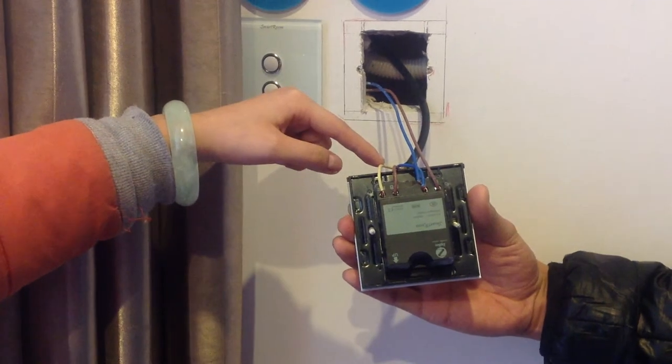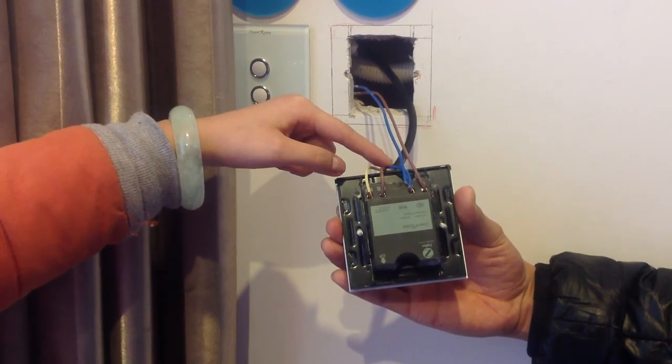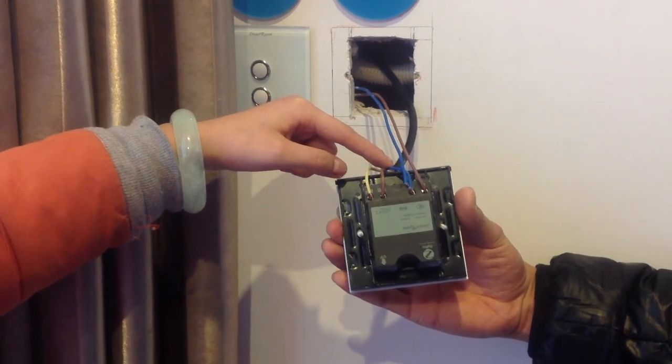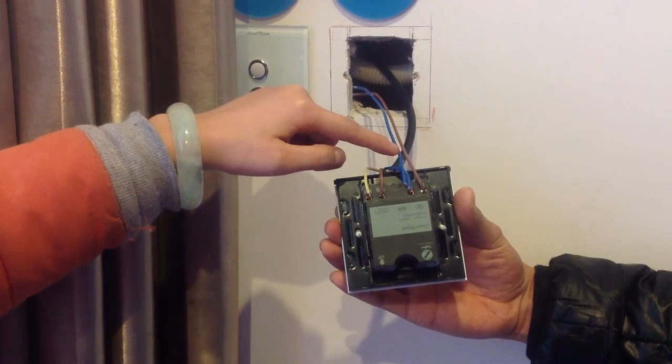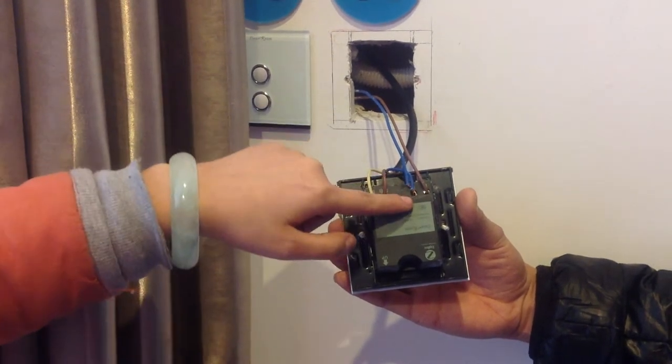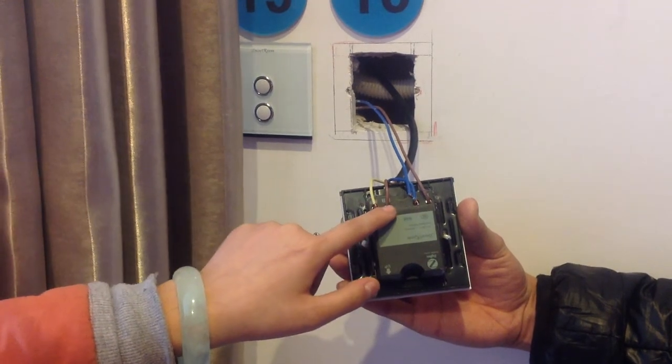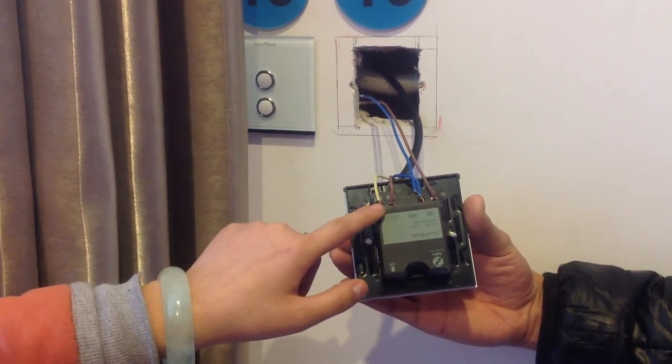This blue one is the curtain's line line. So you can see this power's line line and the curtain's line lines - they are connected to the same hole. And this one and this one, they control the curtain open and on.